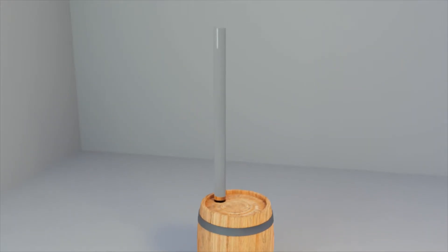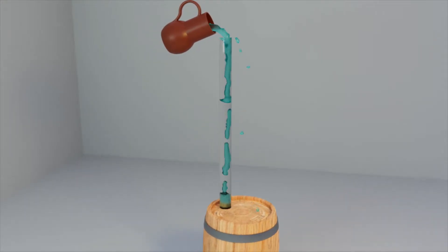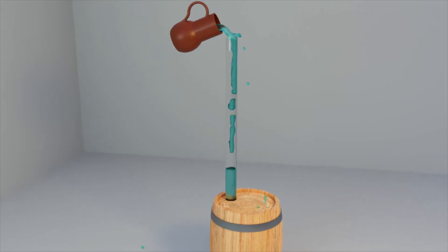He attached a thin, high tube to a barrel filled with liquid and began pouring liquid through it. Due to the small diameter of the tube, the height of the liquid column rose rapidly, while the pressure also increased.